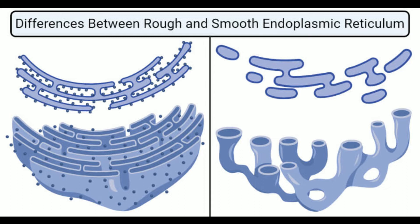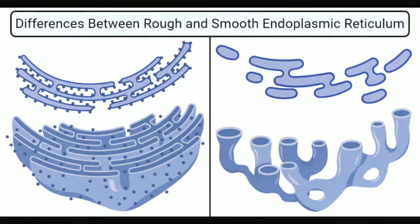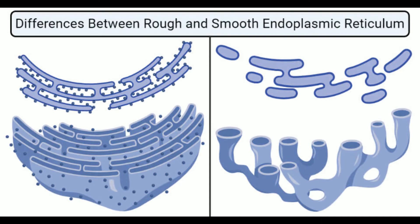Smooth ER, like rough ER, is found in both animals and plants. In humans, smooth ER is prominent in the cells of the liver and cells that produce steroid hormones. The smooth endoplasmic reticulum is mainly composed of a network of tubules and is mostly located nearby the cell membrane. These structures are often associated with the formation of spherosomes or oleosomes.